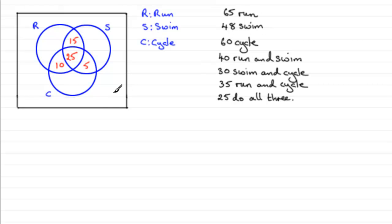60 cycle. So we know that all four regions here must add up to 60. This region here would be those that only just cycle. But for 60 that cycle, if you add up these three here, it comes to 40, so that leaves us with 20 that only do cycling.